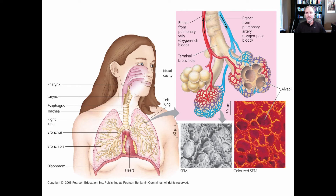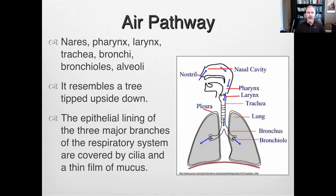Looking at the picture, you can see the lungs have a spongy appearance. The alveoli are tiny end sacs encapsulated by capillaries where gas exchange actually occurs. The air pathway consists of the nares, pharynx, larynx, trachea, bronchi, bronchioles, and alveoli — a lot like an upside-down tree. From your nose into your lungs, the surface area is getting greater and greater.